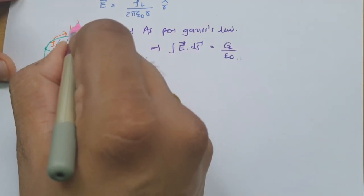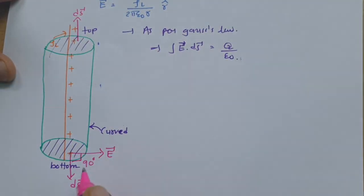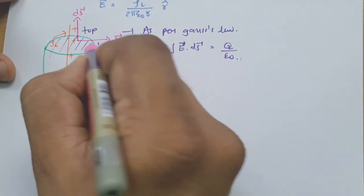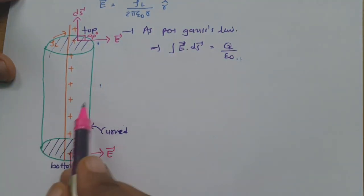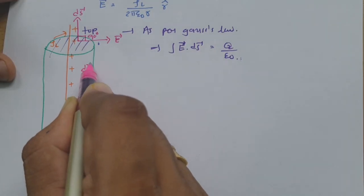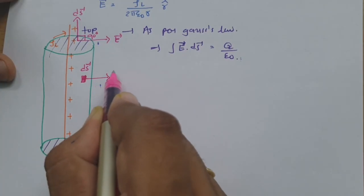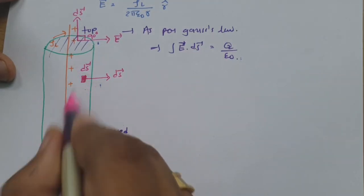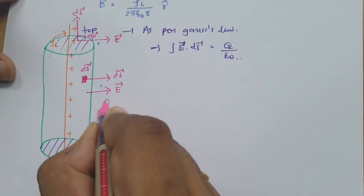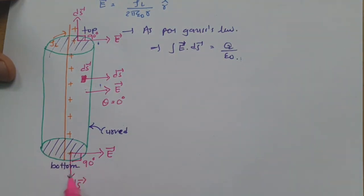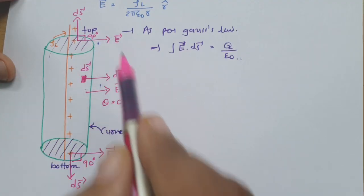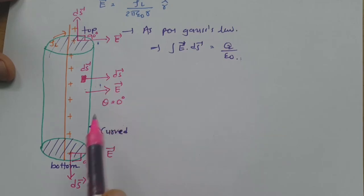For the curved surface, considering a small differential element dS, its direction points radially outward, which is the same direction as the electric field from the line charge. So the angle θ between E and dS for the curved surface is 0°. In summary: for the bottom surface, angle = 90°; for the top surface, angle = 90°; for the curved surface, angle = 0°.